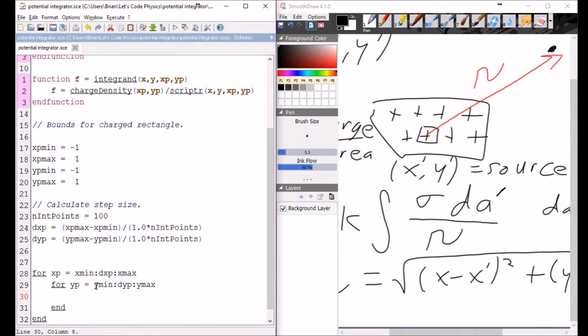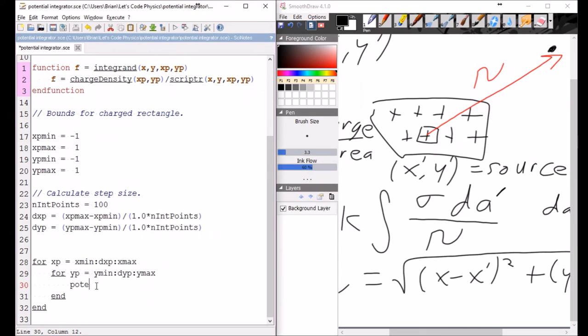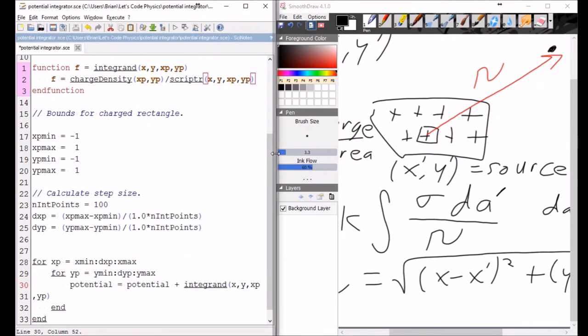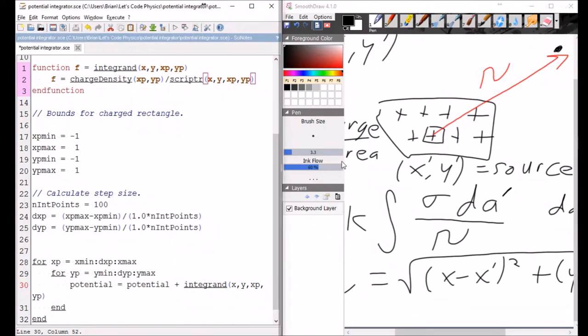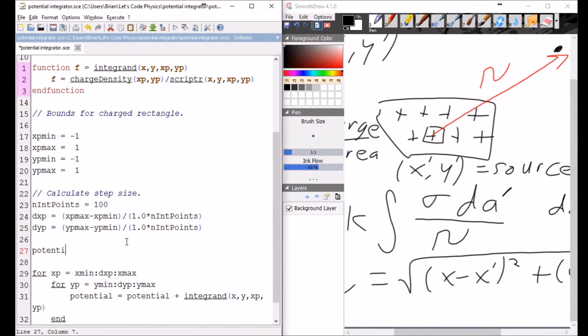What I need to do next is to calculate the actual integral. So let's call that potential equals potential plus. The way I do the integral is I take the integrand of x, y, x prime, y prime. So basically you're adding up one piece at a time. So I'm taking the contribution from this piece, then I add to it the contribution from this piece, and I add the contribution from this piece, et cetera. So I have to initialize that to zero. And then I need to multiply by the dA prime. So I multiply by my step size in each direction times dx prime times dy prime.